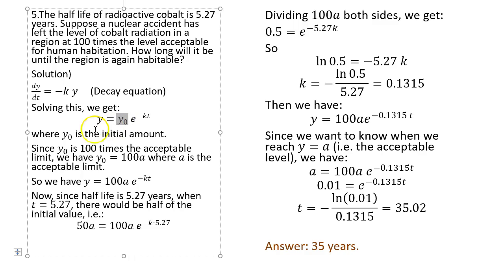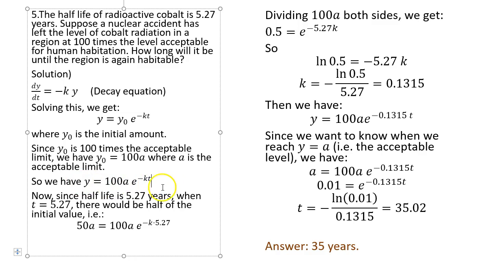That means y(0) is the initial amount. If you say the acceptable level of cobalt is a, then because we have 100 times the acceptable amount, the initial amount is 100a. So you replace y₀ by 100a, and this is what you get.